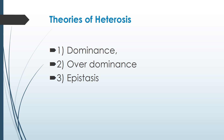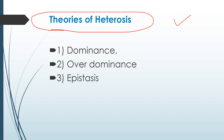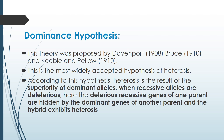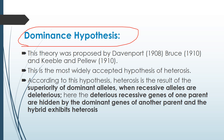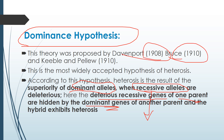Various theories have been propounded to explain heterosis. The first is the dominance hypothesis, which states that heterosis is mainly exhibited due to dominant alleles masking the effect of recessive alleles. The deleterious recessive genes of one parent are hidden by the dominant genes, so only dominant characters are expressed. This theory was proposed by Davenport in 1908, Bruce in 1910, and Keeble and Pellew in 1910, and is the most widely accepted hypothesis of heterosis.